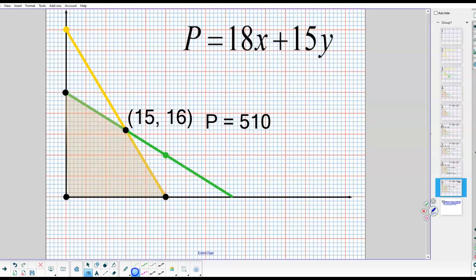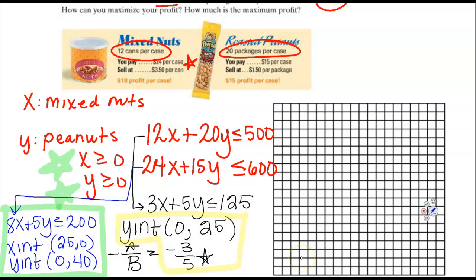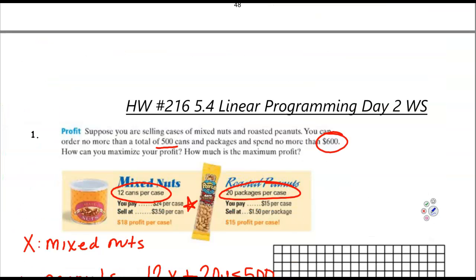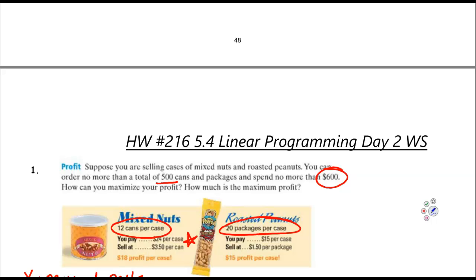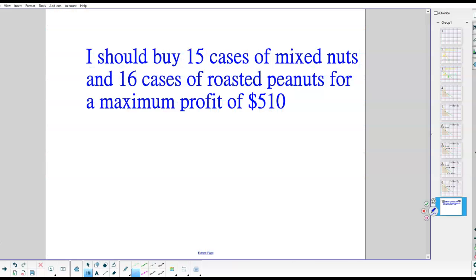And remember the 15 and the 16 represent cases of mixed nuts and cases of roasted peanuts. So to answer the question in the beginning where it was wanting to know how I was going to maximize my profit, that answer is going to be 15 cases of mixed nuts and 16 cases of roasted peanuts for a maximum profit of $510.